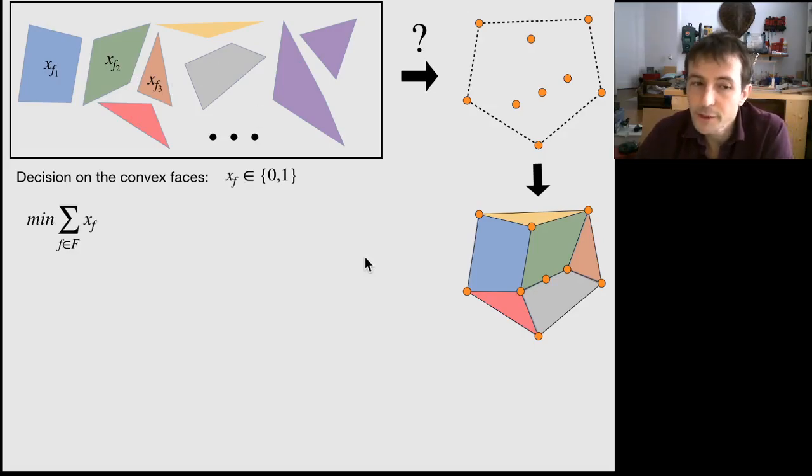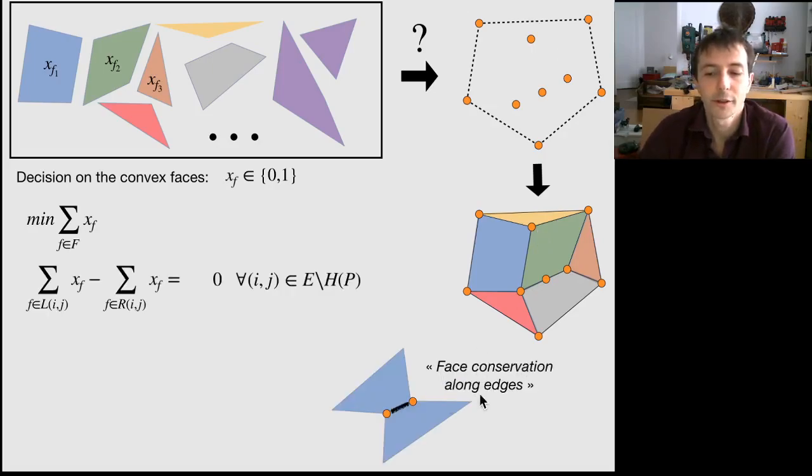So the objective is easy to state. We are minimizing the number of faces. And the tiling constraints, the constraint enforcing a proper tiling, is what I call a face conservation along edges.